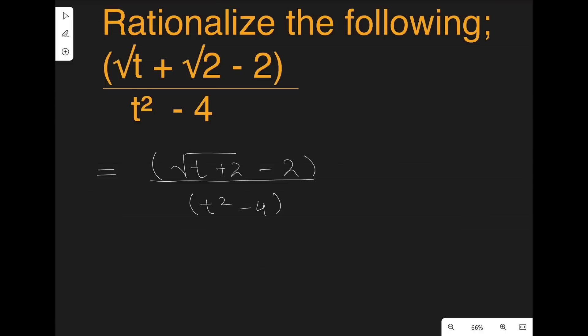So, for rationalizing the numerator, we're just going to multiply and divide it with the same term but with different signs.